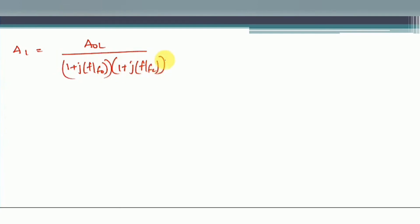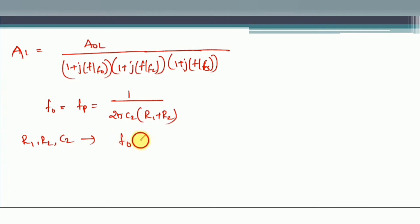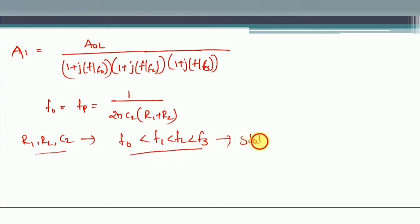This is the overall transfer function of the pole-zero compensating network. The pole frequency F0 = 1/(2π·C2·(R1 + R2)). We must design R1, R2, and C2 such that the condition F0 < f1 < f2 < f3 is maintained. If we maintain these values, we can convert an unstable system into a stable system.